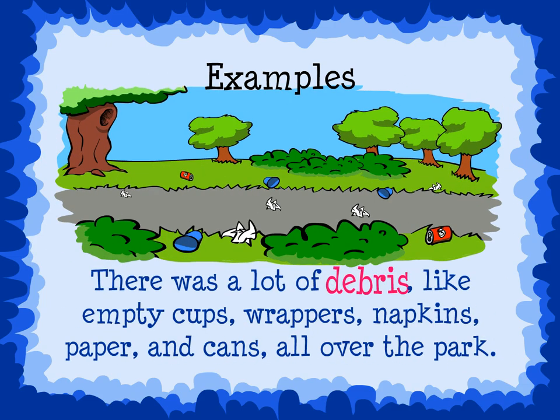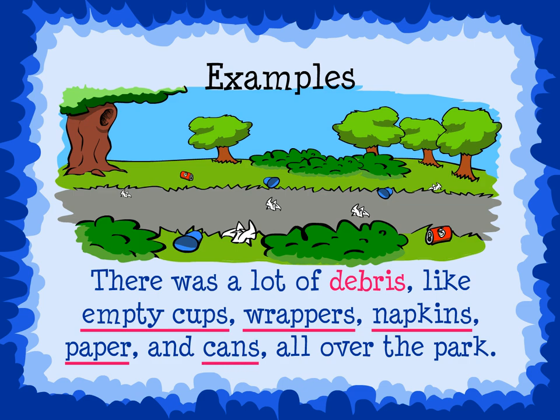Another way context clues help us is to give examples of the word. Let's take a look at this sentence: there was a lot of debris, like empty cups, wrappers, napkins, paper, and cans all over the park. The sentence gives examples — empty cups, wrappers, napkins, paper, and cans. These examples help us to figure out the meaning of the word debris, or trash.